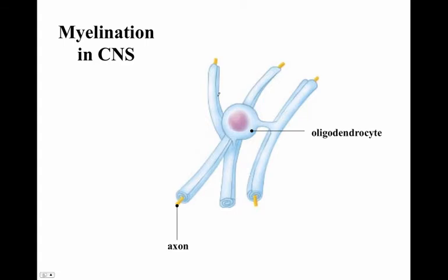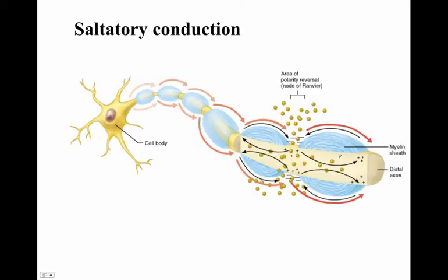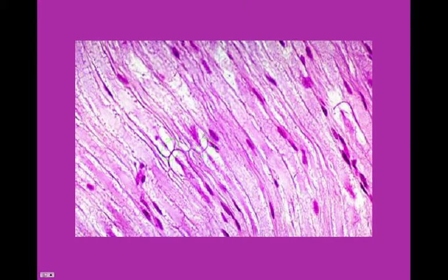Myelination in the central nervous system is handled by oligodendrocytes. So in the peripheral nervous system, myelination is provided by Schwann cells, and in the central nervous system, that same insulation is called an oligodendrocyte. Saltatory conduction is the idea that action potentials propagate at the nodes of Ranvier, so we don't have to open ion channels all the way down the entire axon — we can jump between nodes to more speedily transmit current down the axon.